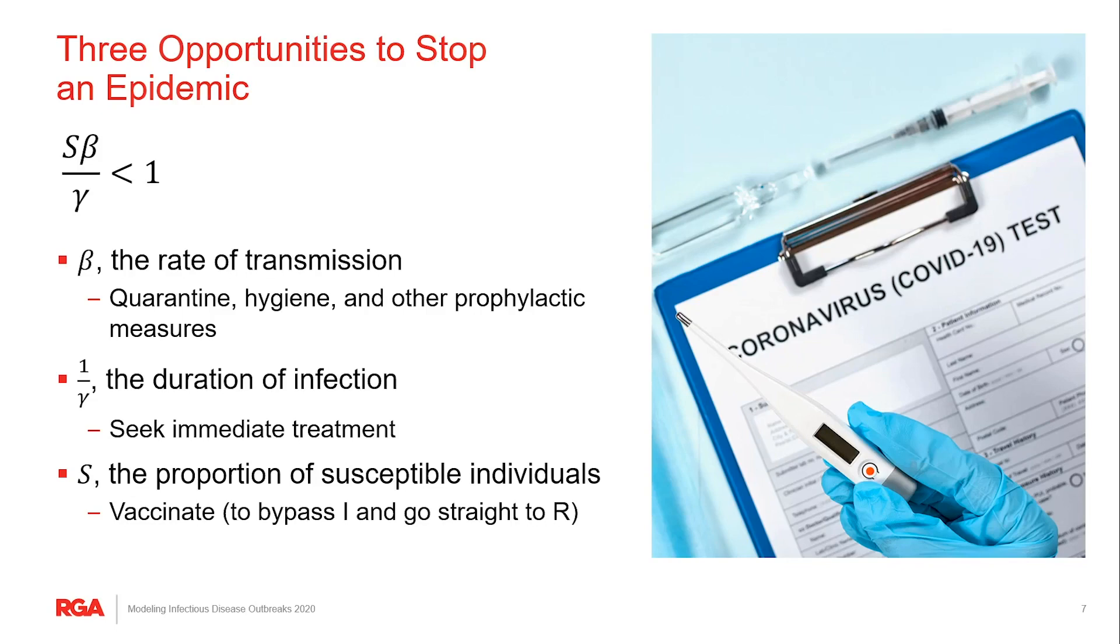But what if we could skip the infectious box altogether and move people from the S box directly into the R box with a vaccine? The ratio could shrink dramatically with zero infections and we could start out in a much better place. This is exactly what vaccinations do. And in fact, if enough people are vaccinated that the starting point starts out below one, then we have what we call herd immunity and an outbreak can't ever even begin.